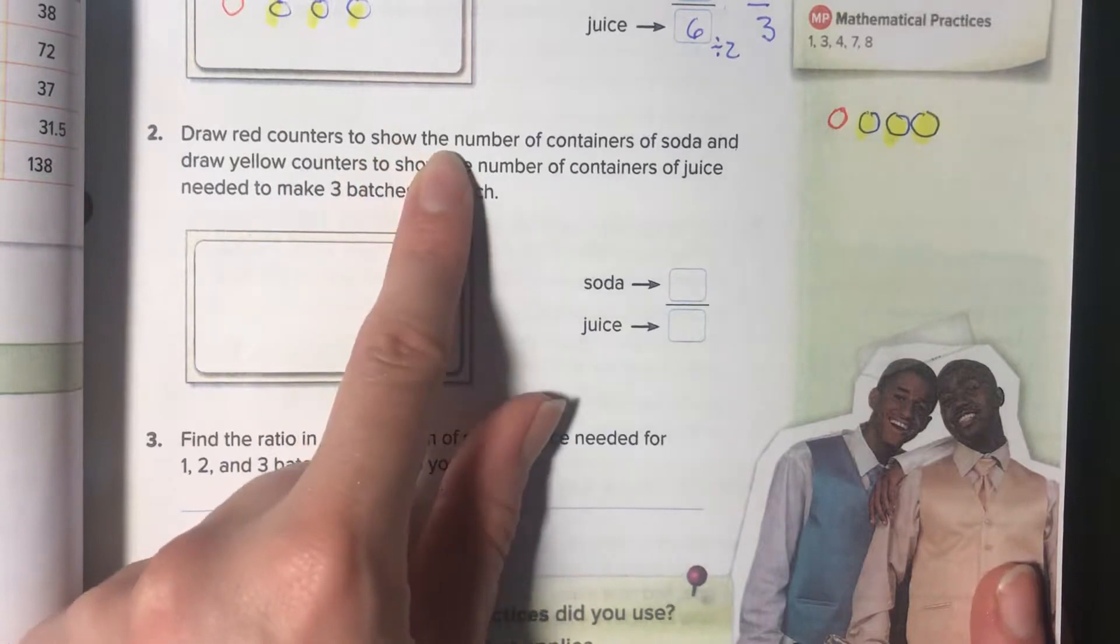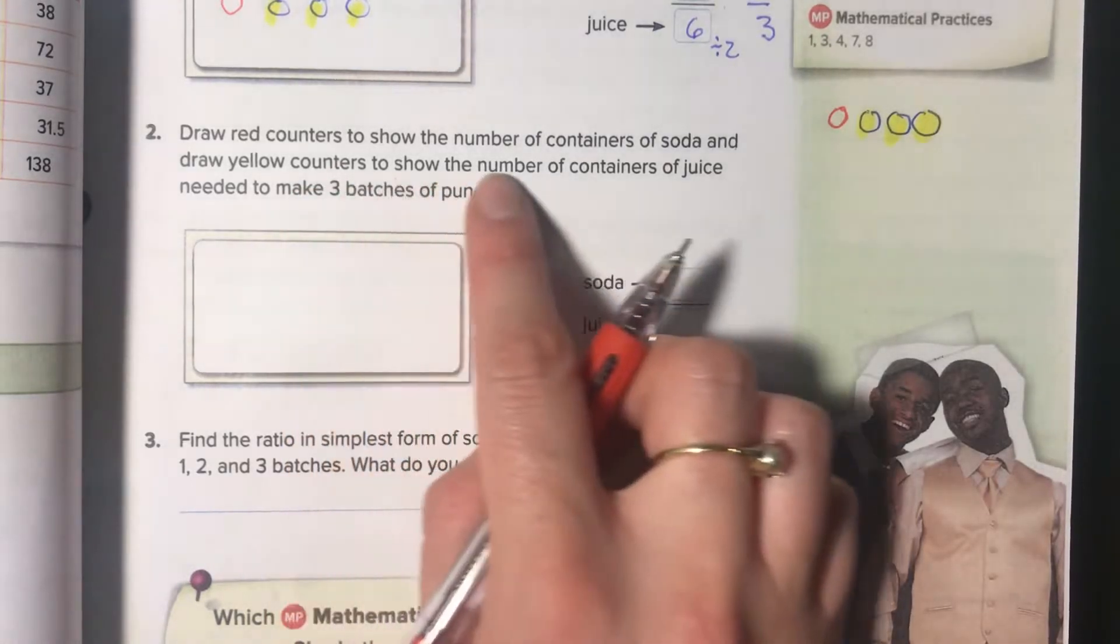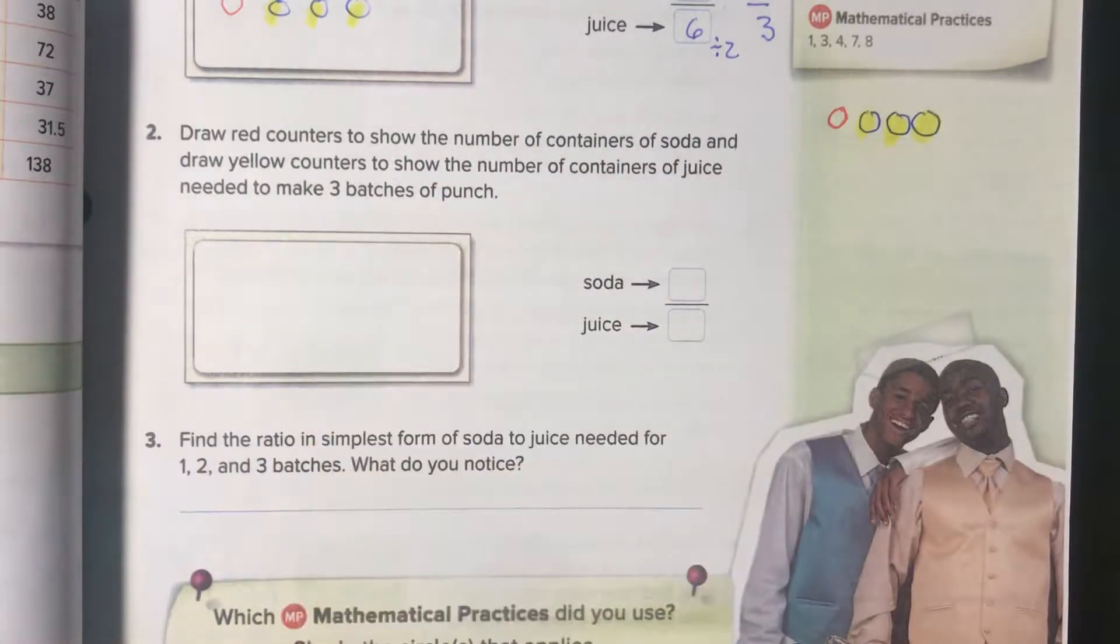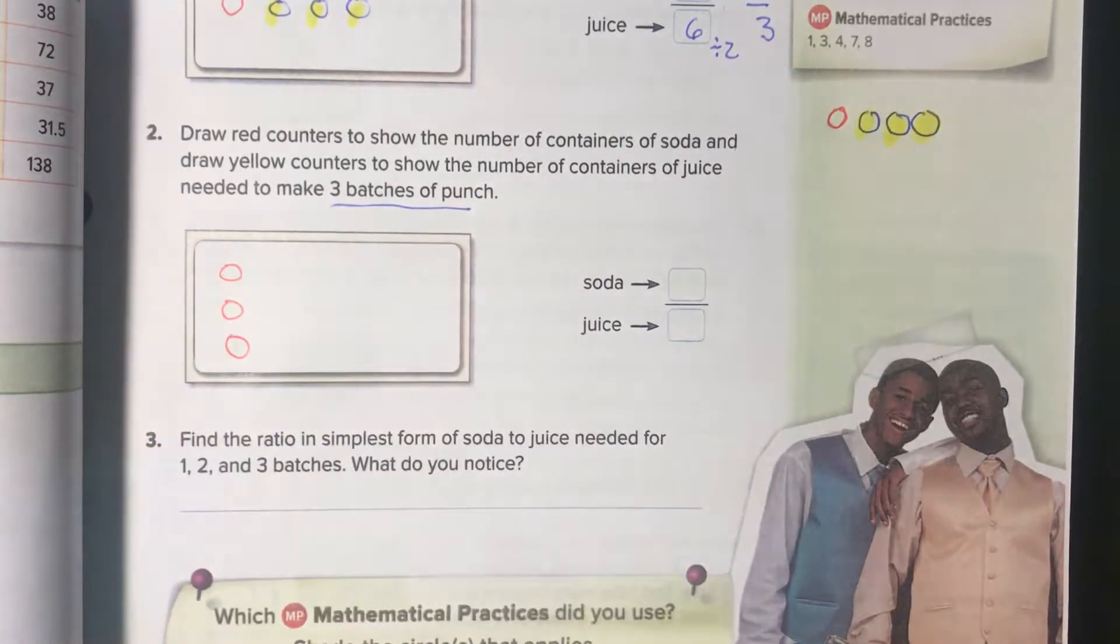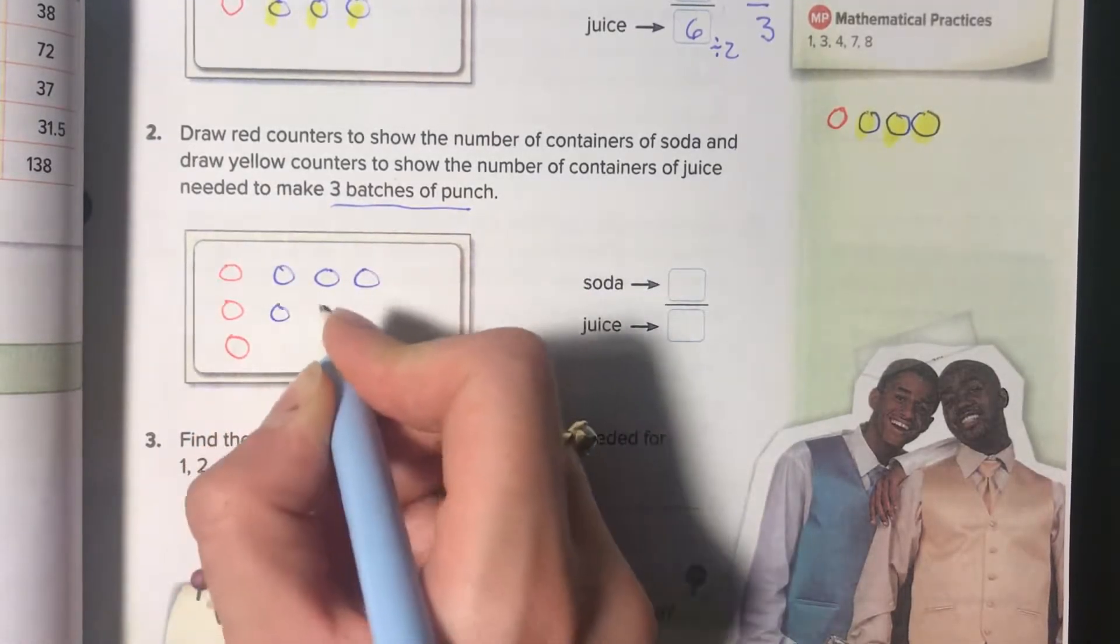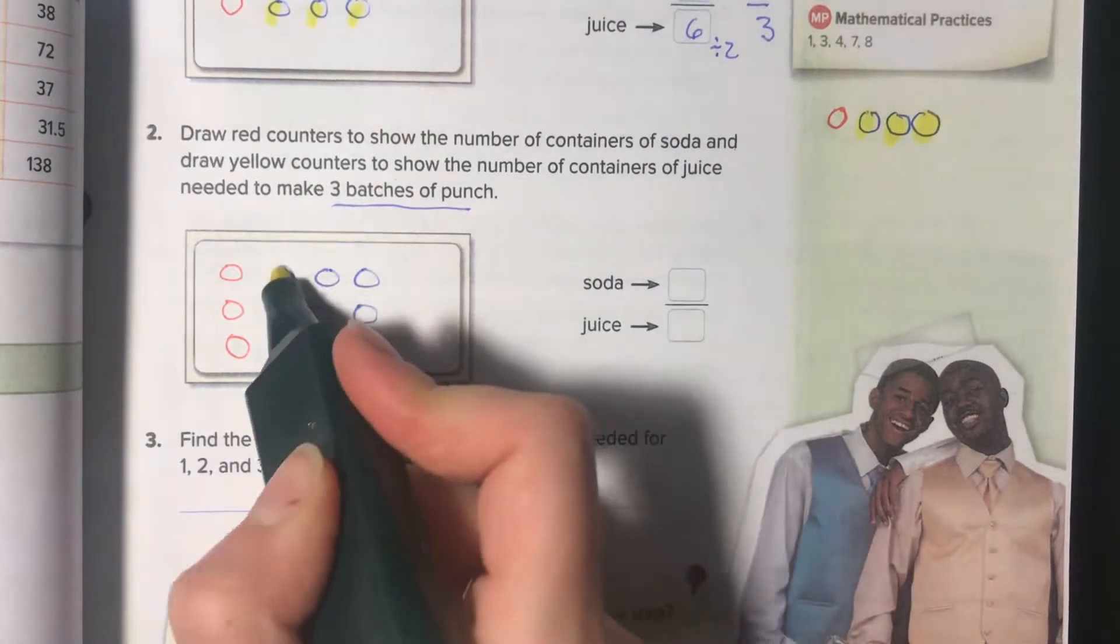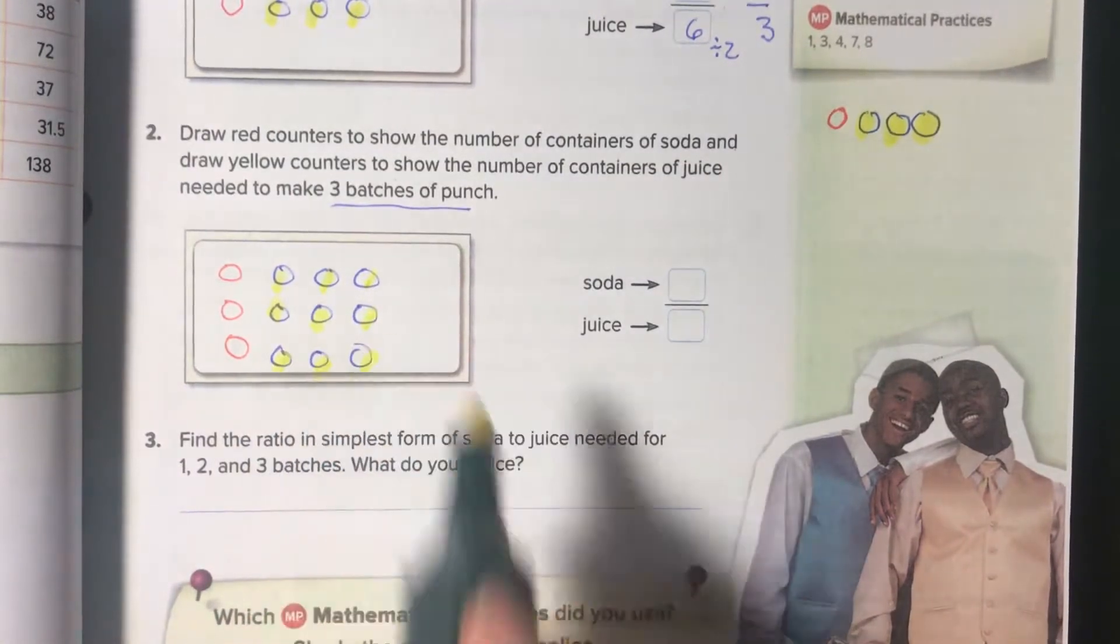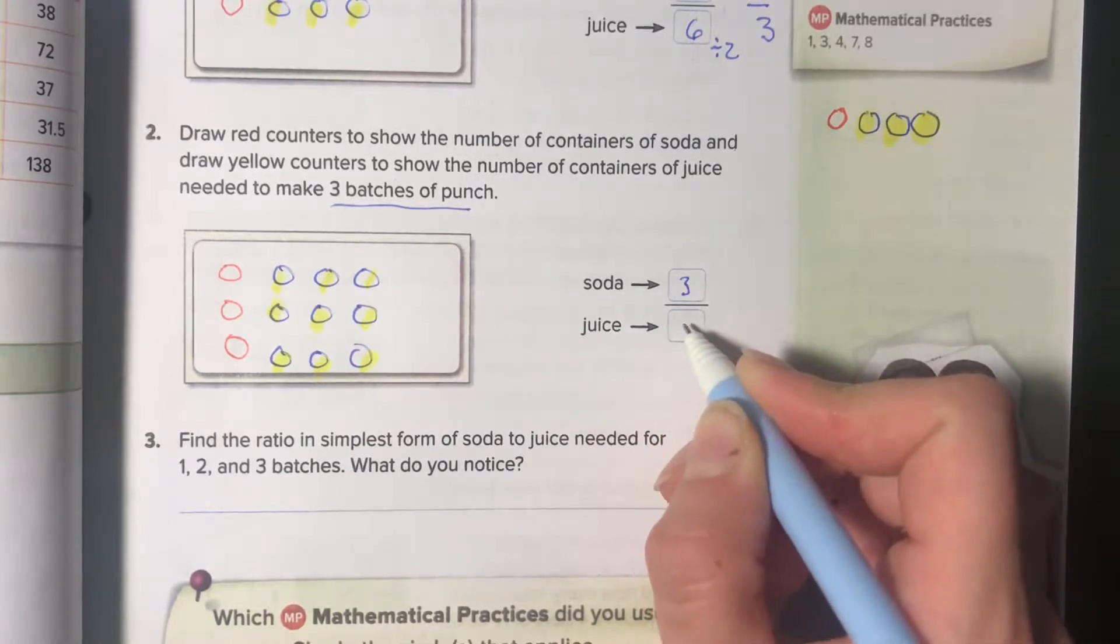Now number two, it says draw red counters to show the numbers of containers of soda. And yellow to show the numbers, containers of juice for three batches. So the new information here is three batches. So now I have three batches. Those are my sodas, and these are my juices. One batch, two batch, and three batch. I'll just make them yellow. So this is three batches. So now sodas, three, and juices is nine.